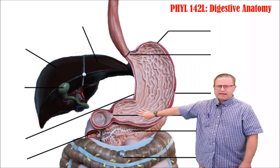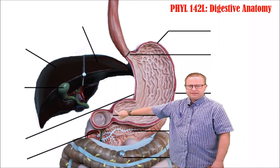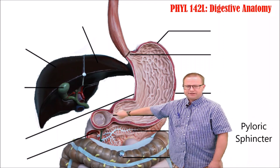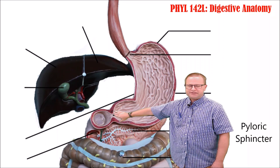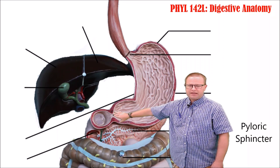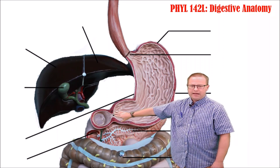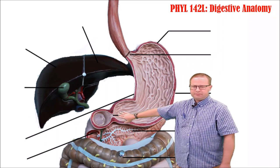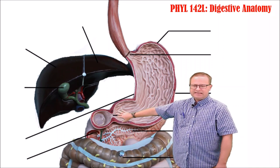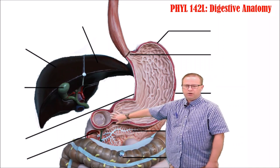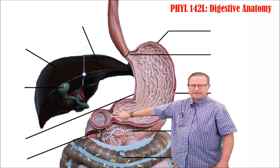Going past the curvatures, we get into the pyloric region of the stomach and the pyloric sphincter. The pyloric sphincter is the junction between the stomach and the small intestine, where food moves through at a very limited rate because the small intestine can only take a little bit of food at one time.